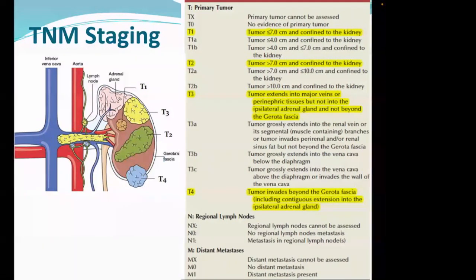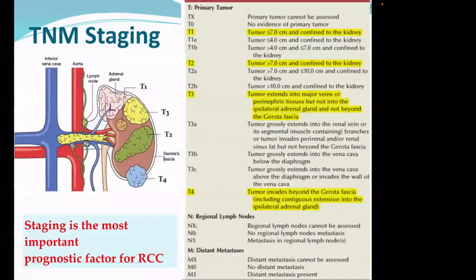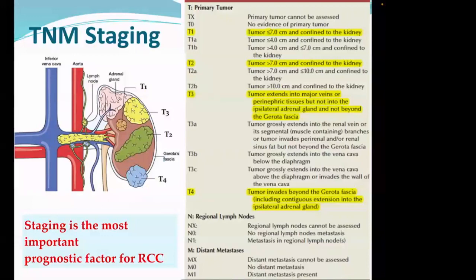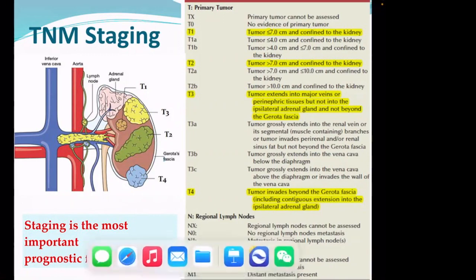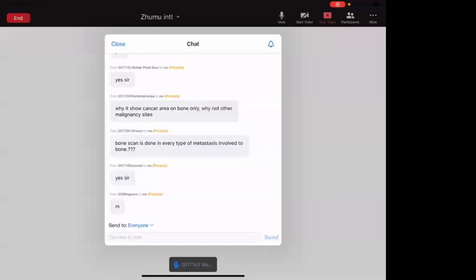Staging is the most important prognostic factor for RCC. That means if you want to know whether the cancer is going to behave aggressively and how long the patient is going to survive - that depends on staging. If the patient is in early stage with localized cancer, survival is very high. If the patient has stage four metastatic disease, survival is very low. That is why staging is the most important prognostic factor.